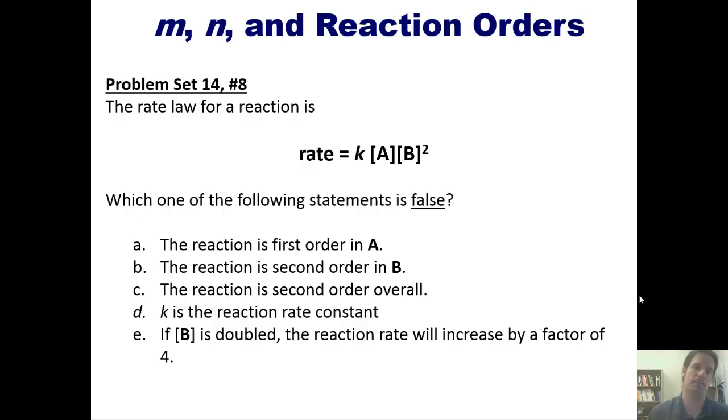Here's the first one. The rate law for a particular generic reaction is given according to this equation. Which of the following statements is false? The reaction is first order with respect to A. The reaction is second order with respect to B. The reaction is second order overall. K is the reaction rate constant. Or if B is doubled, the reaction rate will increase by a factor of four. I'm not going to answer this question for you, but we'll let you think about it and see if you can come up with the answer for yourself.